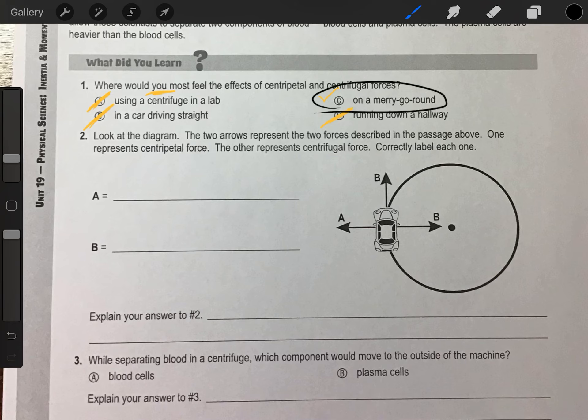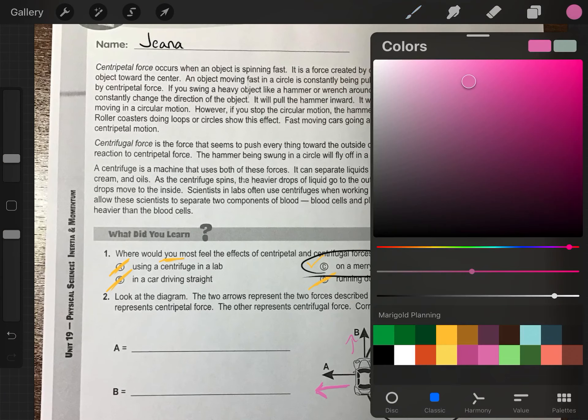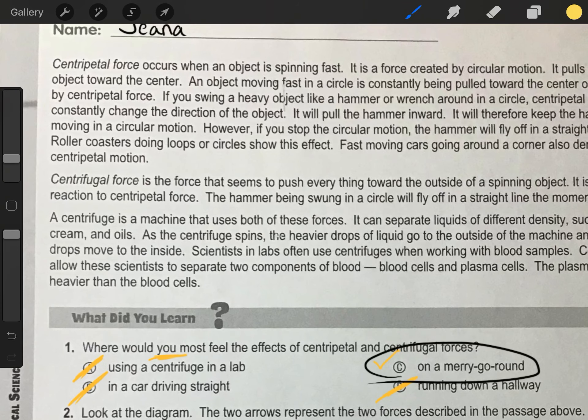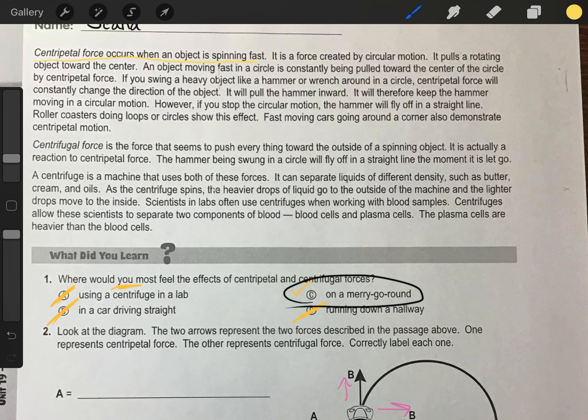Now, let's look at this diagram. There are two arrows representing the force as described in the passage above. One represents centripetal force. The other represents centrifugal force. We can correctly label each one. So we have A and B. B are these two arrows that look like it is pulling the car towards the center of the circle and also away from the circle, which is keeping it moving in a line. And then A is an arrow going directly away from the car. And that's a force that's pulling the car away from the circle. So let's go back to our passage, read the definitions again of these two forces so we can figure it out. Centripetal force occurs when an object is spinning fast. It pulls a rotating object towards the center.